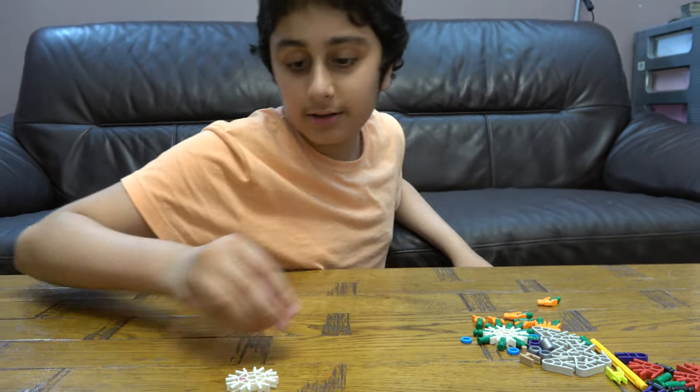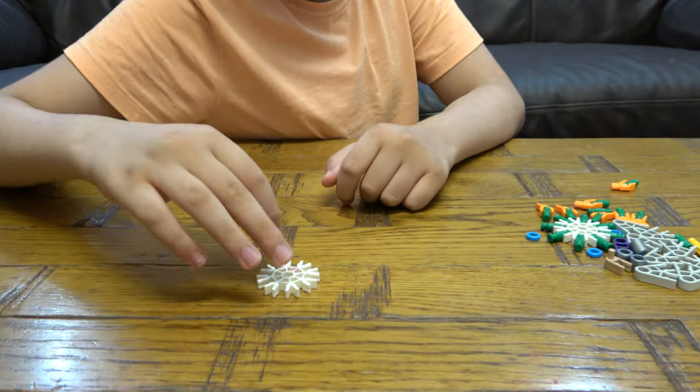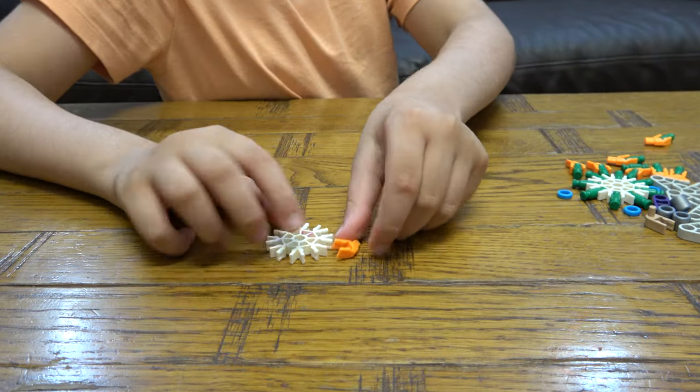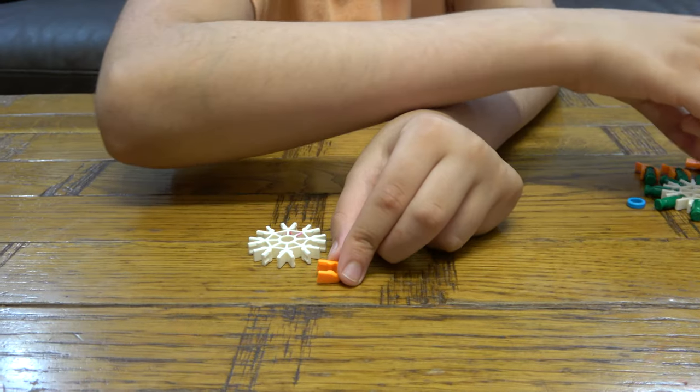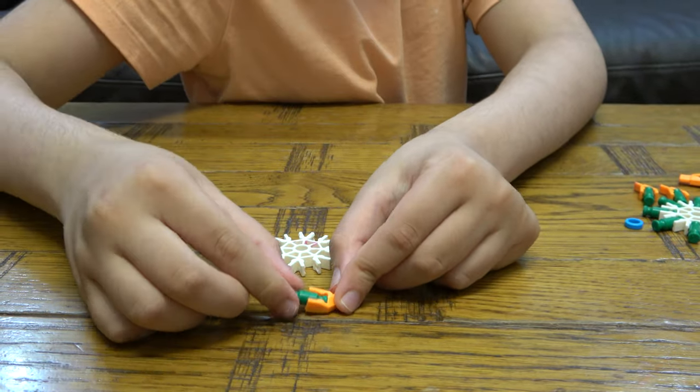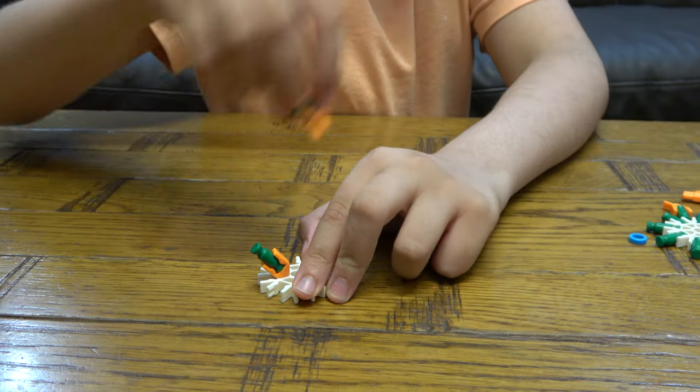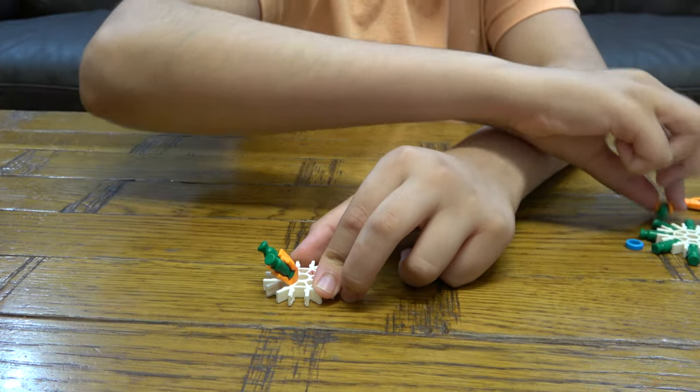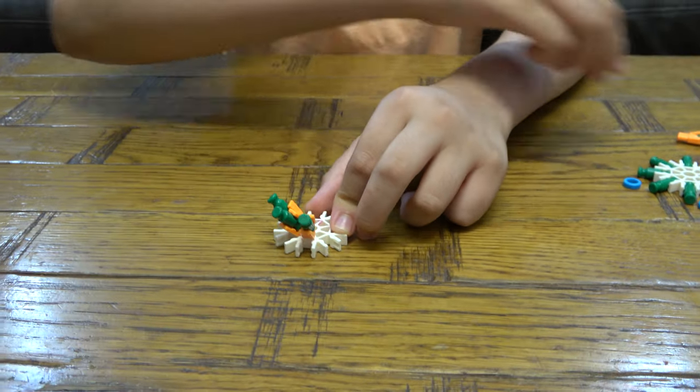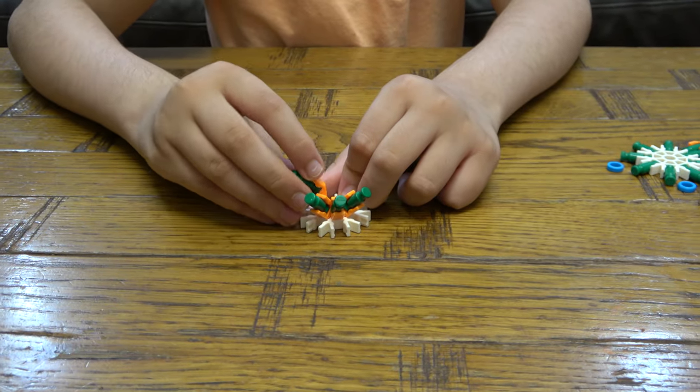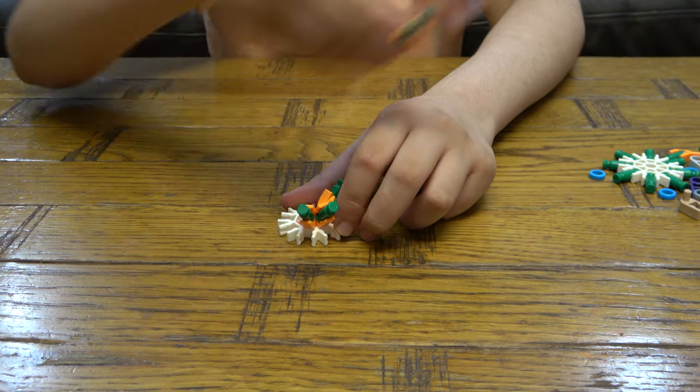Hey guys, today I'll be showing you how to make a connect flower, so let's start. First things first, we're going to get this here, then we're going to get eight of these. But before we do that, we're going to place this on it like so. So make eight of these, like so.